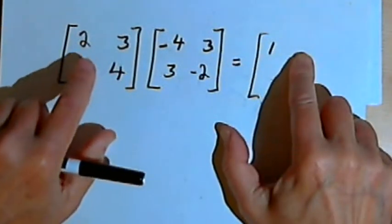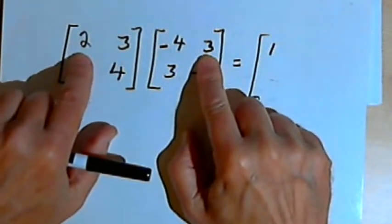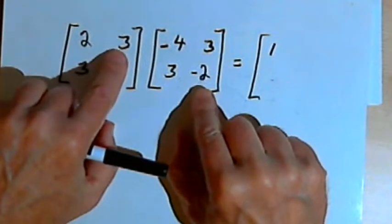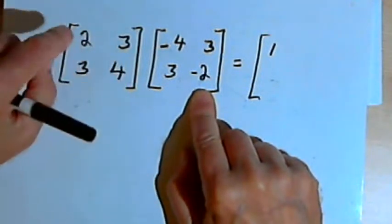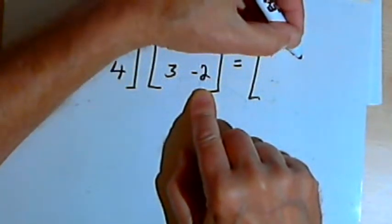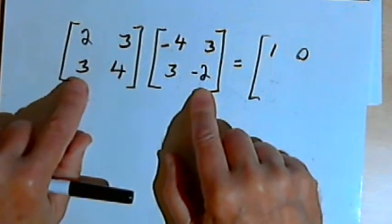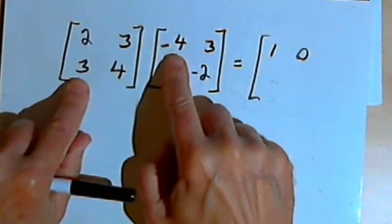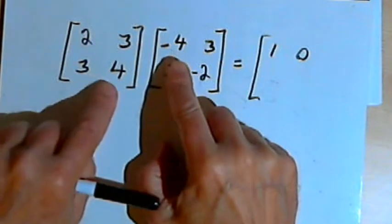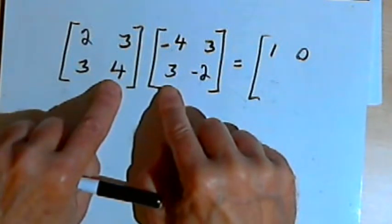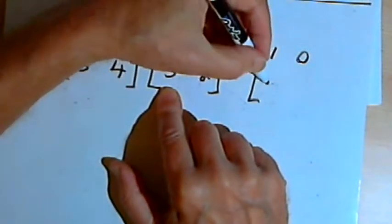I'll go to the next position. I want 2 times 3, which is 6, and then 3 times negative 2, which is negative 6. Adding those together we get 0. Down here I'm multiplying 3 times negative 4 is negative 12, and 4 times positive 3 is positive 12. Those add up to 0.